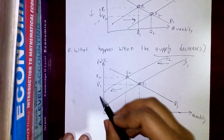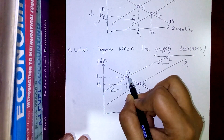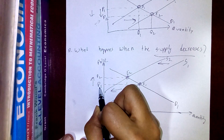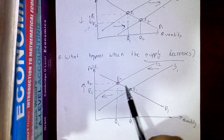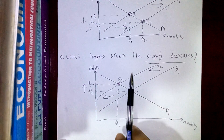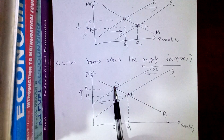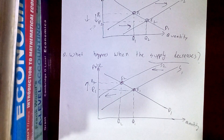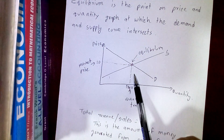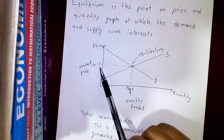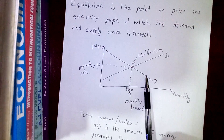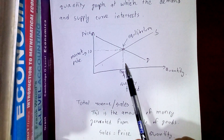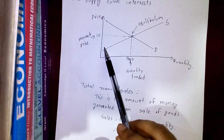Drawing a demand and supply curve again, with equilibrium E1, price P1, and quantity traded Q1. When the supply of a product decreases, the supply curve shifts leftward. S2 is the new supply curve, the new equilibrium point is E2, the new market price is P2, and Q2 is the new quantity traded. The price of the product increases from P1 to P2 when supply decreases.